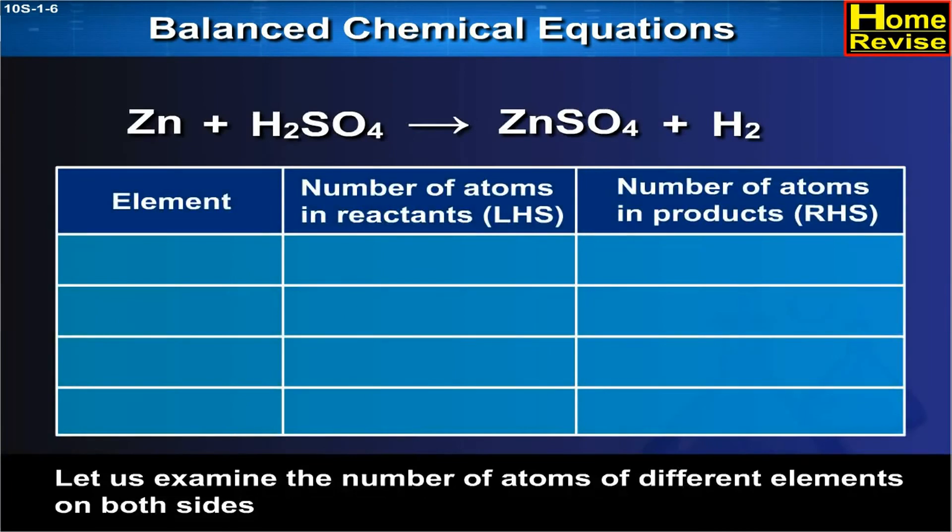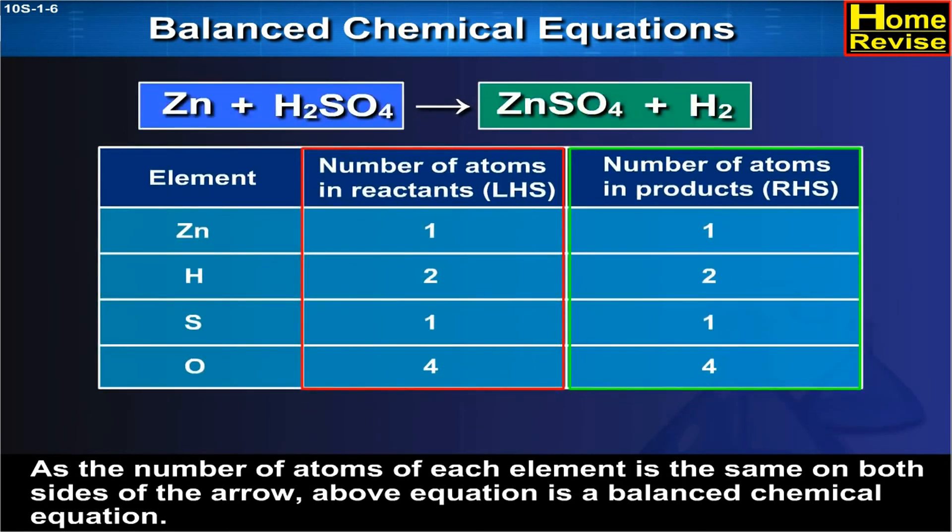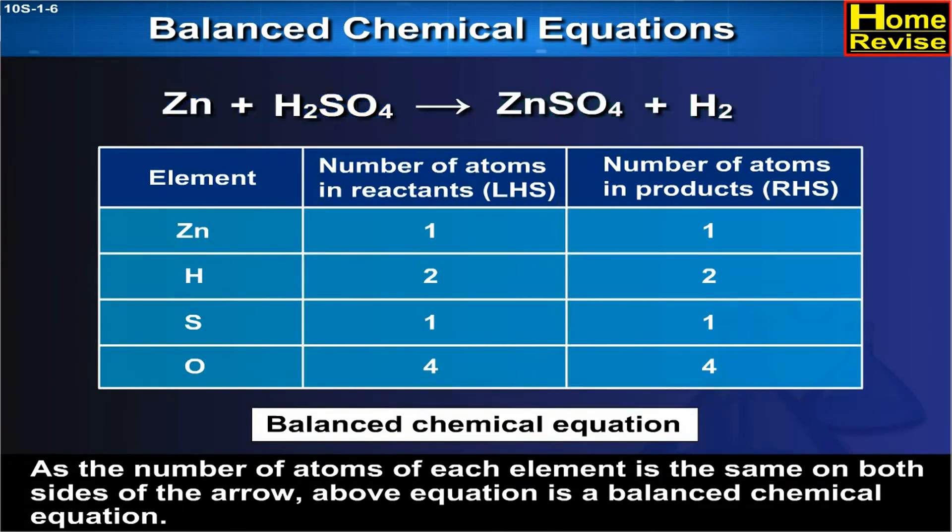Let us examine the number of atoms of different elements on both sides. Number of Zinc atoms on left hand side in reactants is 1 and on right hand side of products is 1. Number of hydrogen atoms on left hand side in reactants is 2 and on right hand side in products is 2. Number of sulfur atoms on left hand side in reactants is 1 and on right hand side of products is 1. Number of oxygen atoms on left hand side in reactants is 4 and on right hand side of products is 4. As the number of atoms of each element is the same on both sides of the arrow, above equation is a balanced chemical equation.